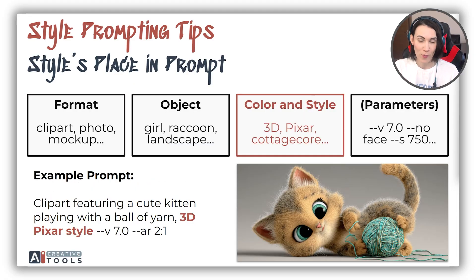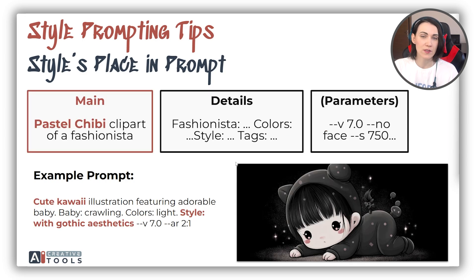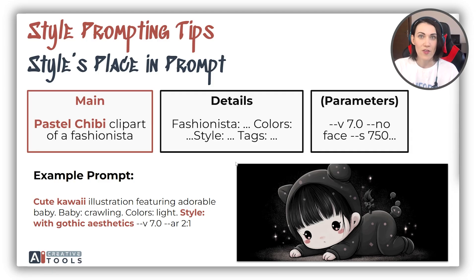So where's the proper place for style details in your prompt? Usually it goes at the end, right before parameters, like this. But if your prompt is very long, or if AI keeps skipping certain details, move them to the beginning. Remember, the closer a word is to the start, the more likely it is to be depicted. The start of your prompt is the prime real estate.